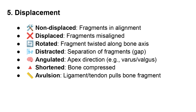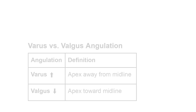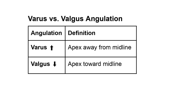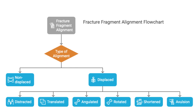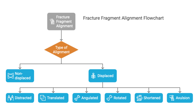And even with angulation, we have specific terms. Varus is where the point of the angle is pointing away from the midline of the body, and valgus is where it's pointing towards it — imagine someone who's knock-kneed, that's valgus at the knee; varus would be bow-legged. Then you can have rotational displacement where the fragments are twisted, shortening where the bone is actually shorter because the pieces are overlapping, and avulsion where a tendon or ligament actually pulls a piece of bone off. It all allows us to paint a really precise picture of exactly what's going on.